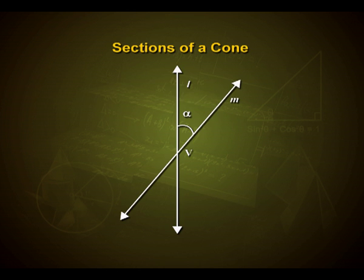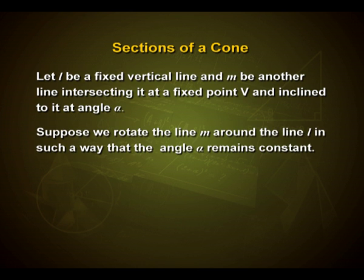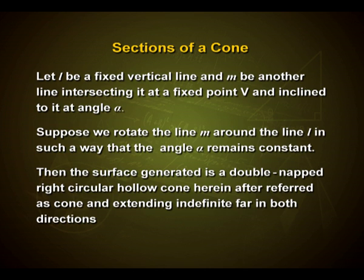Under various sections of a cone, let L be a fixed vertical line and M be another line intersecting it at a fixed point V, inclined to it at angle alpha. Suppose we rotate the line M around the line L in such a way that the angle alpha remains constant.